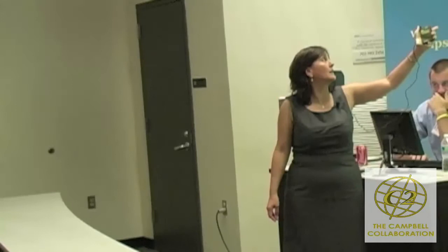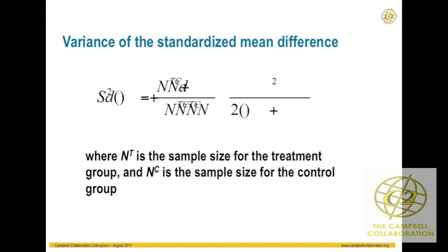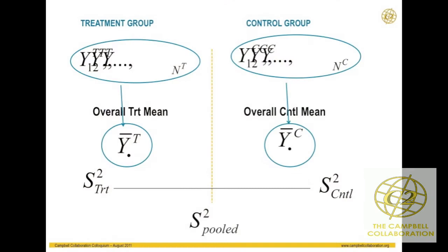This should look familiar from this morning. In the variance formula for the standardized mean difference, we have the sample sizes for the treatment and control group — NT and NC — and the effect size itself. In my schematic, we have measurements from the treatment group giving an overall treatment mean, estimates from the control group giving the overall control group mean, each with their own standard deviation. We pool that — S-squared pooled — as the denominator of our standardized mean difference. This is the simplest case: a two-group experimental study.